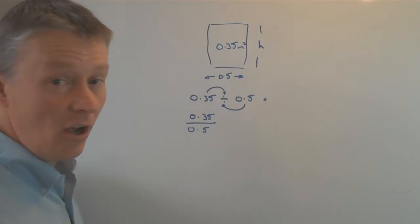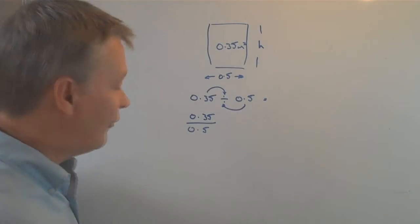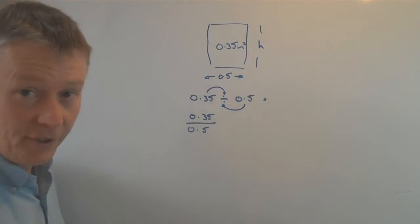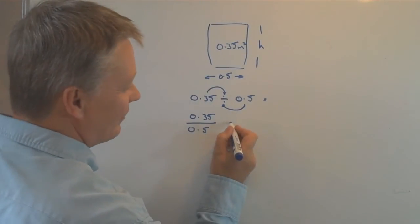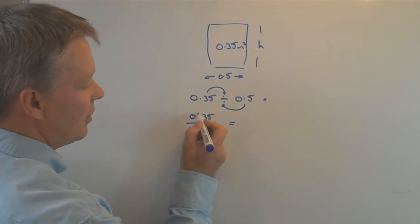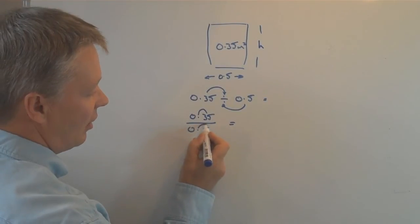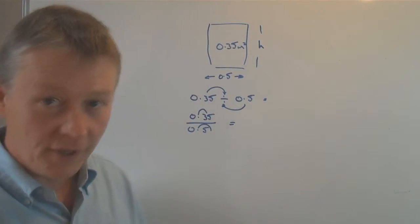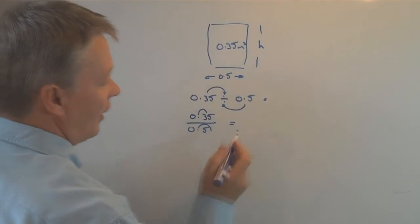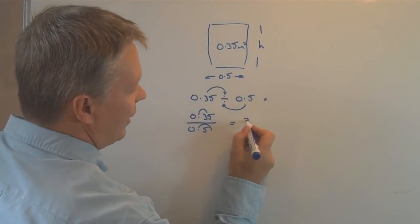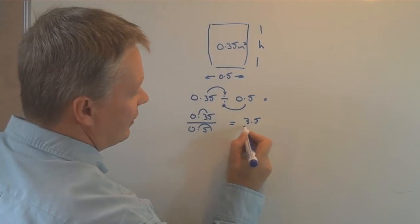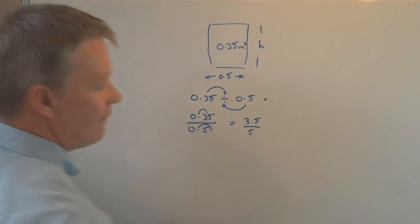So the next thing I'm going to do is move my decimal point along one place with both of these numbers. So here we are, I've got 3.5 divided by 5.